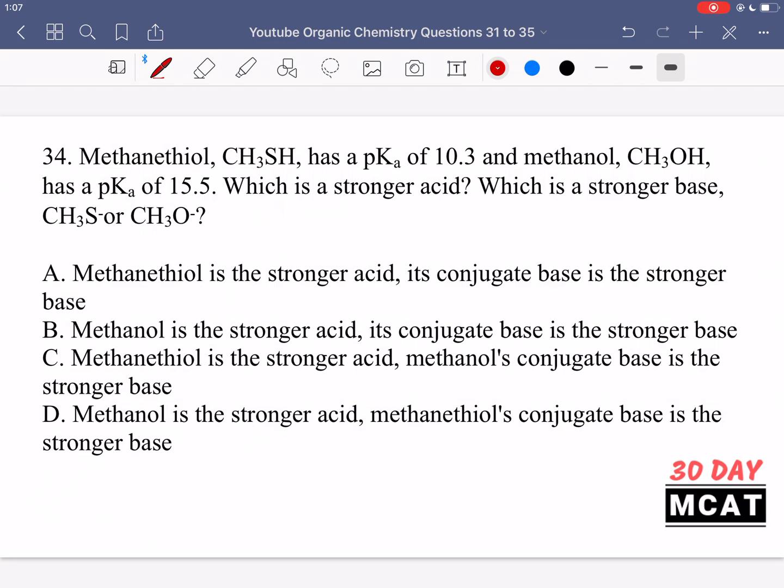Question 34 says methanethiol, CH3SH, has a pKa of 10.3 and methanol, CH3OH, has a pKa of 15.5. Which is a stronger acid? Which is a stronger base?